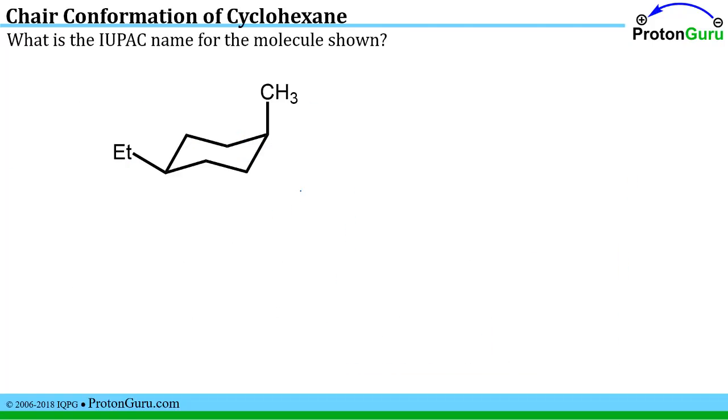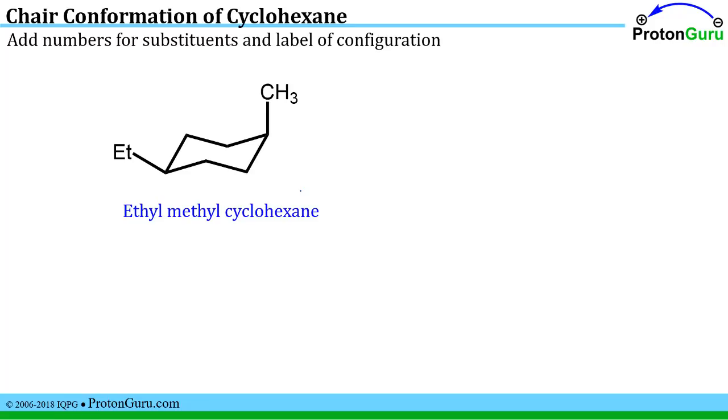Another type of question that you'll see a lot on organic chemistry tests is something like this where you're shown a simple structure and asked what is the IUPAC name for this molecule. And it starts off being pretty straightforward. You just have to figure out what the parent chain is which is the cyclohexyl unit. And then you have to list the substituents alphabetically. We have an ethyl and a methyl substituent. This is some type of ethyl-methyl cyclohexane.